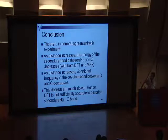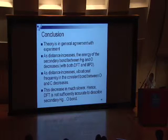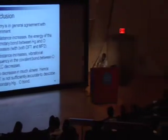As the distance increased, the energy of the secondary bond between the mercury and oxygen decreased. As this increases, the vibrations decrease — but this decrease is much slower, not as exponential, more linear. The DFT wasn't sufficiently accurate to describe the secondary mercury-oxygen bond. But if I were to use Mg2, it probably would have been a prettier graph. Thank you guys.